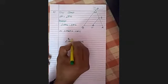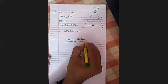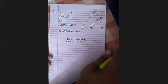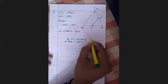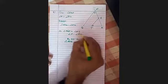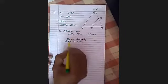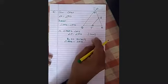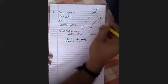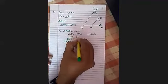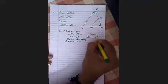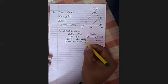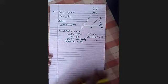Angle R in both triangles is a common angle. So which criteria am I going to use? Double A — AA similarity. I am proving these two triangles as similar. Out of the two sets of corresponding angles, one set is already given: angle P is equal to angle RTS. And angle R is equal to angle R, which is the common angle. So by the double A similarity criterion, triangle RPQ is similar to triangle RTS.